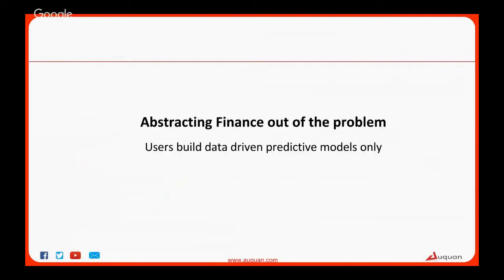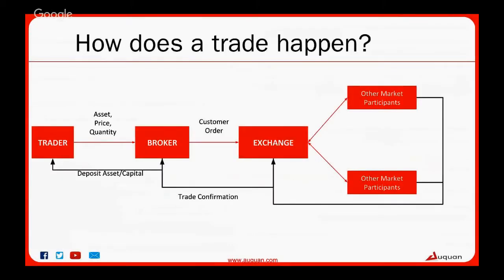Let's talk about the first part: abstracting finance out of the problem. For the uninitiated, this is how a trade happens. The trader — which could be a human or a trading algorithm — makes a trading decision: what to trade, at what price, whether to buy or sell, and how much capital to allocate. That decision goes to your broker, who sends it to the exchange. The exchange receives this from multiple market participants, does trade matching, sends confirmation back to the broker, who deposits the asset into your account and deducts capital.